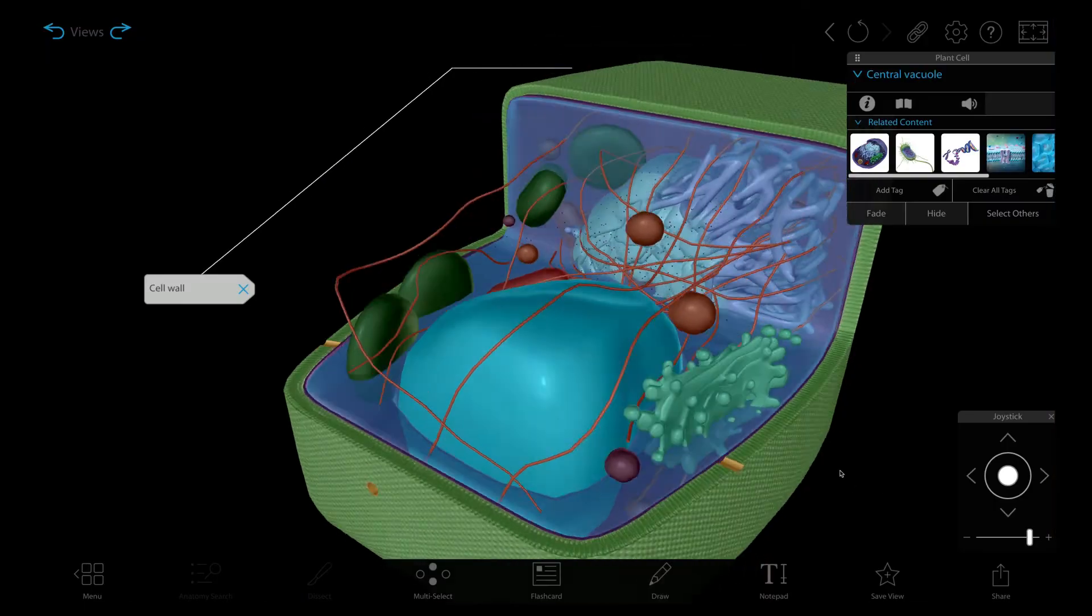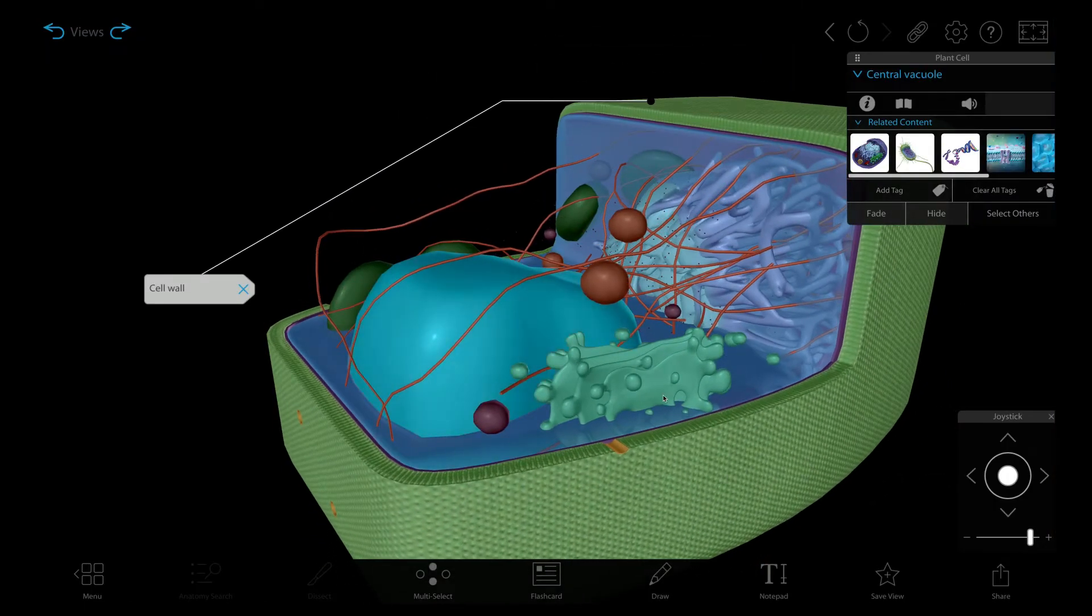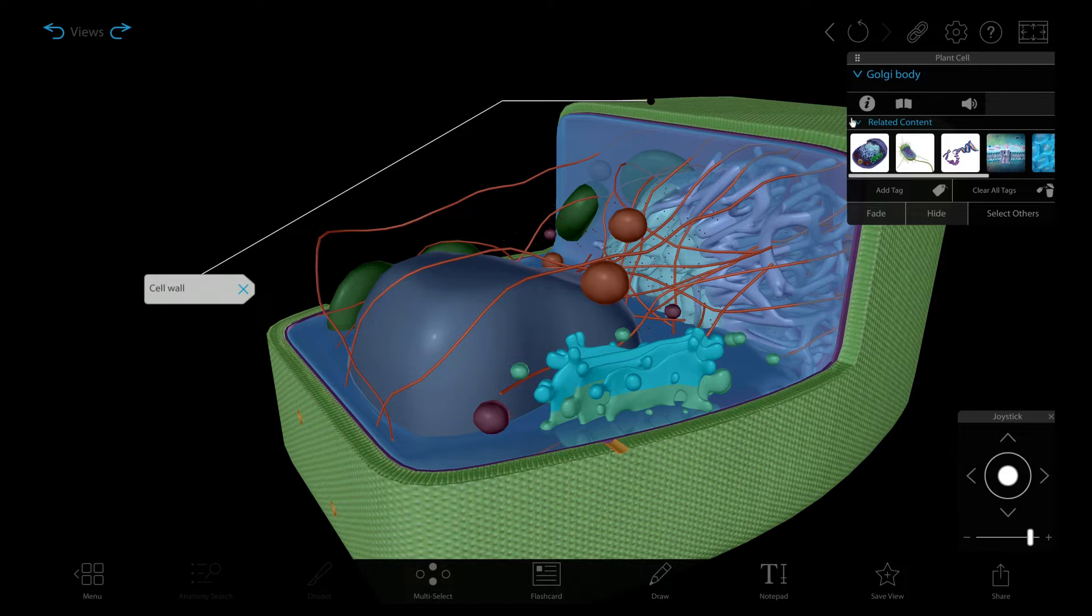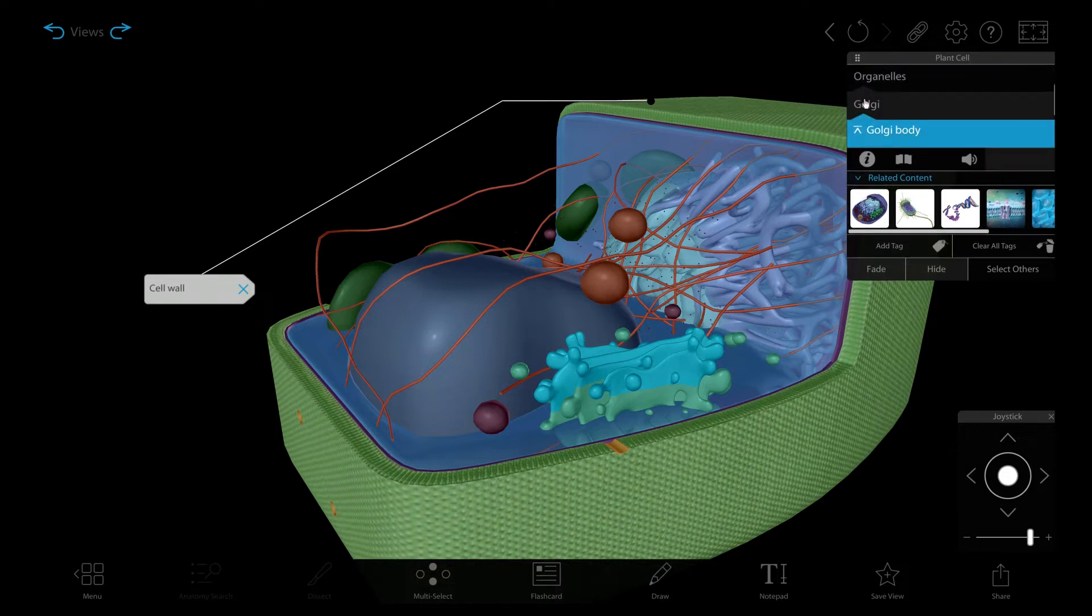The Golgi complex is present in both plant and animal cells, and in both plant and animal cells, it packages and ships things to their destinations. In plant cells, however, it has an additional function. Since plant cells have a cell wall, there needed to be a way to make that structure. This happens in the Golgi. This means it can make the cell wall in-house and it already has the infrastructure to traffic it where it needs to go.